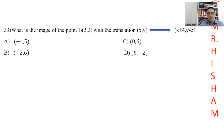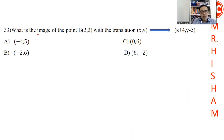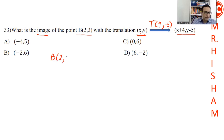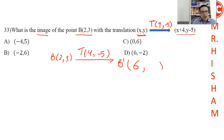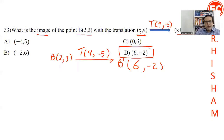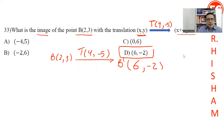Question 33: Find the image of point B under the translation that maps (x, y) to (x plus 4, y minus 5). The translation adds 4 to x and subtracts 5 from y. Starting at point B at (2, 3): B' is (2 plus 4, 3 minus 5), which equals (6, negative 2).